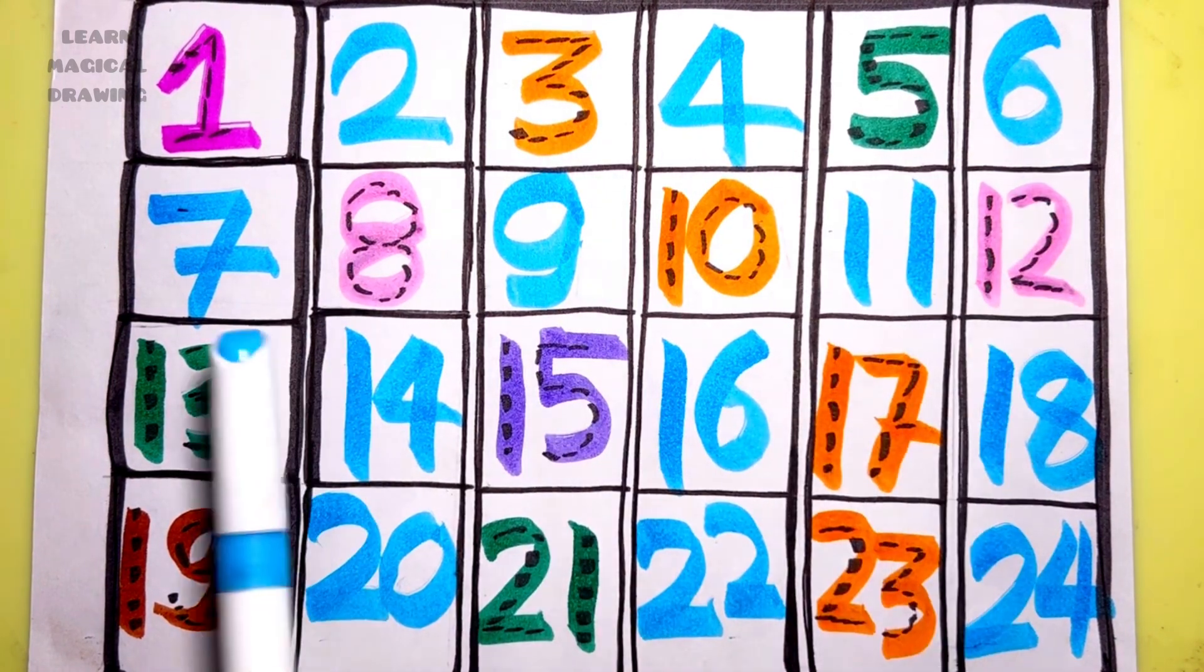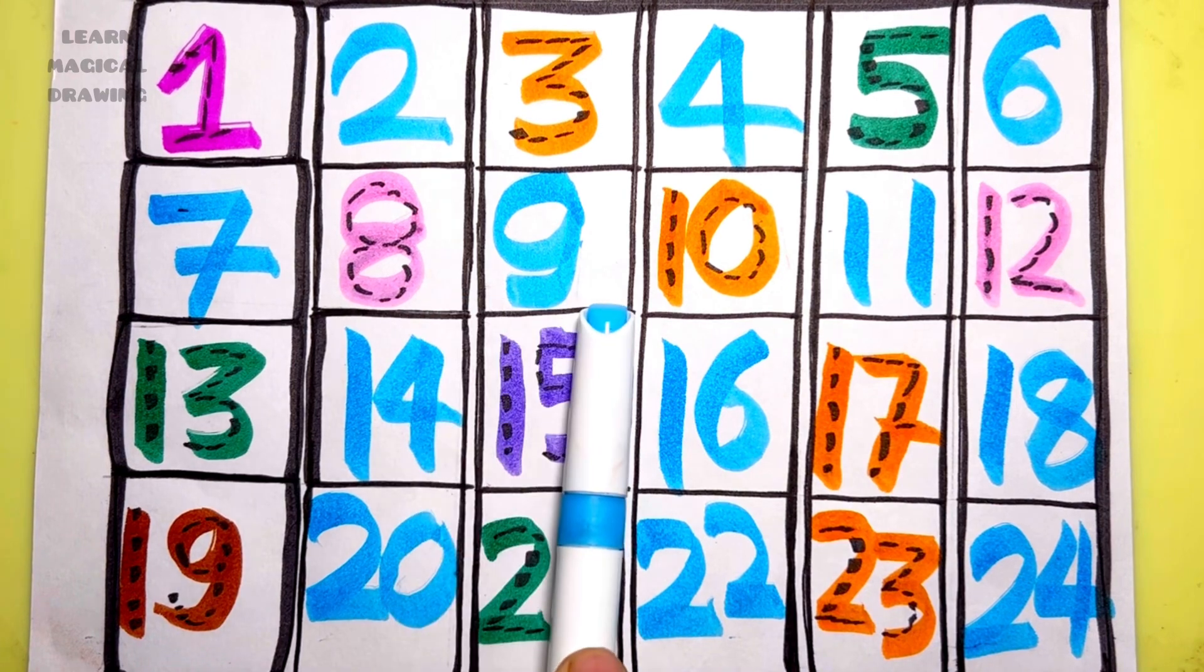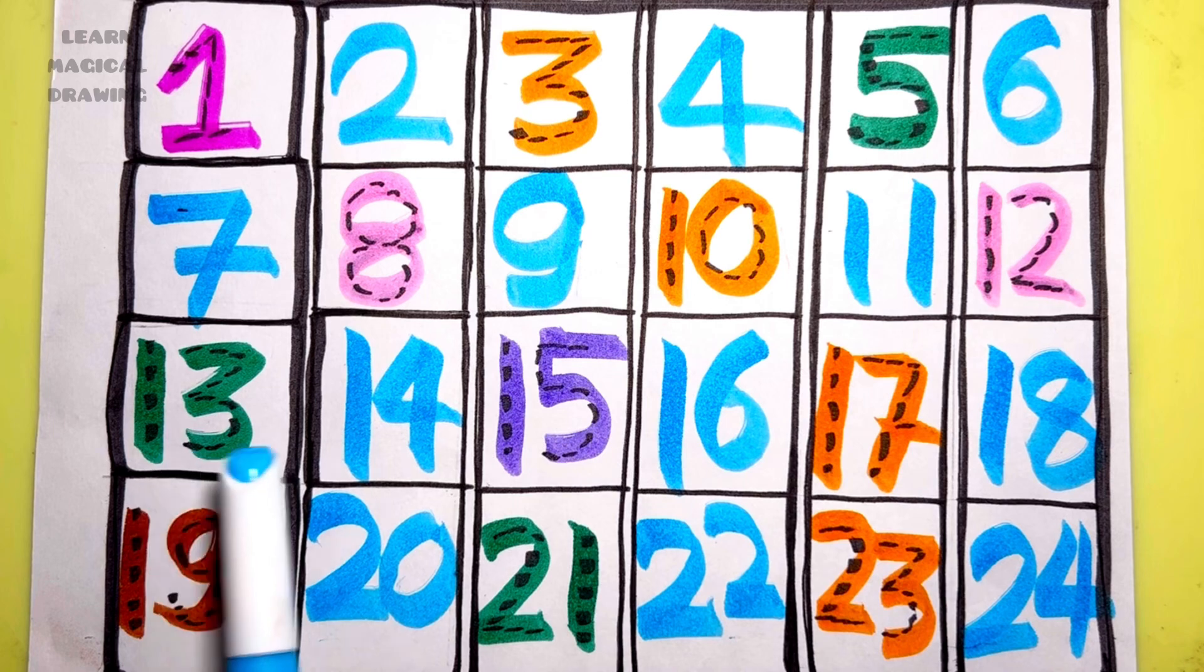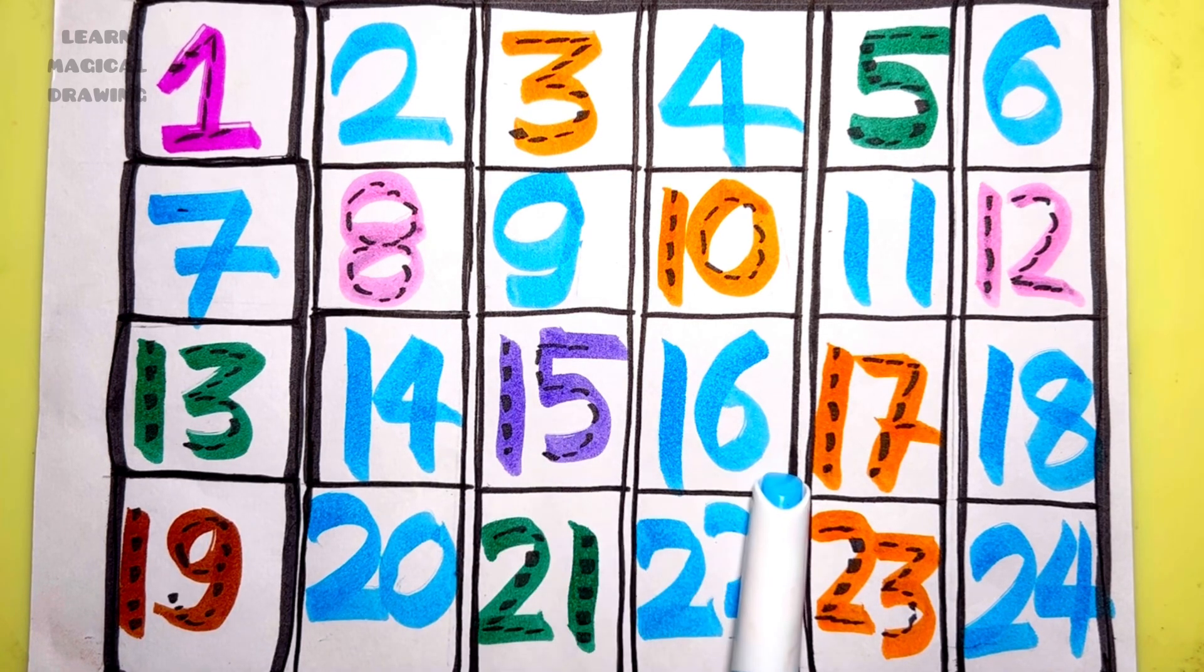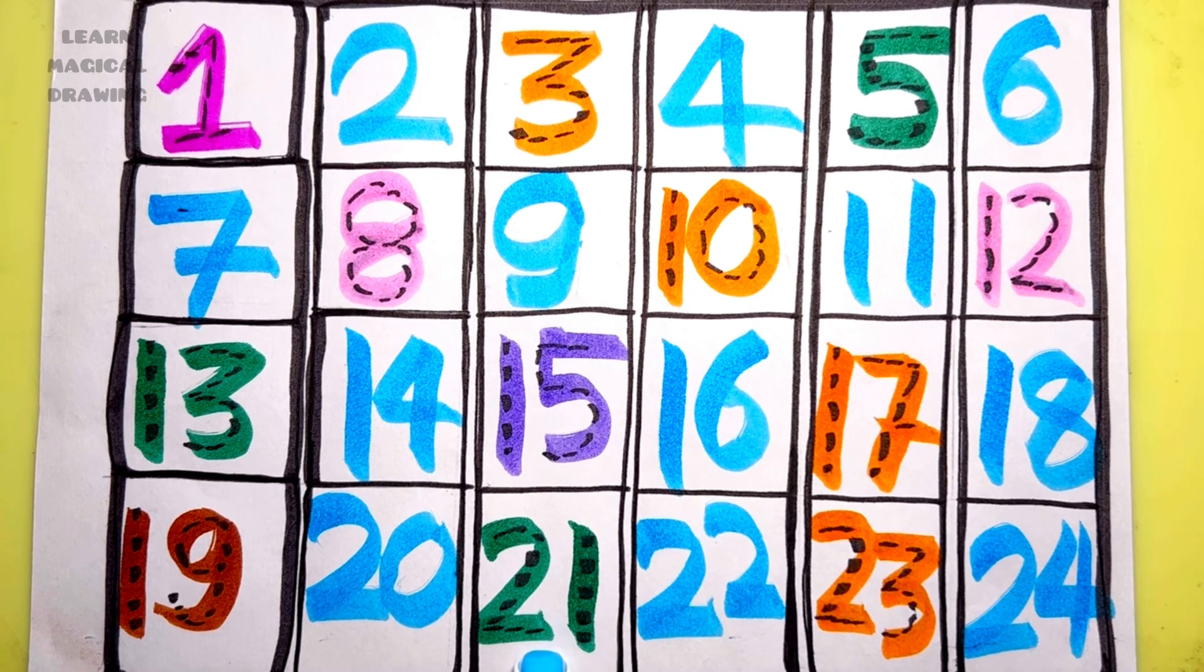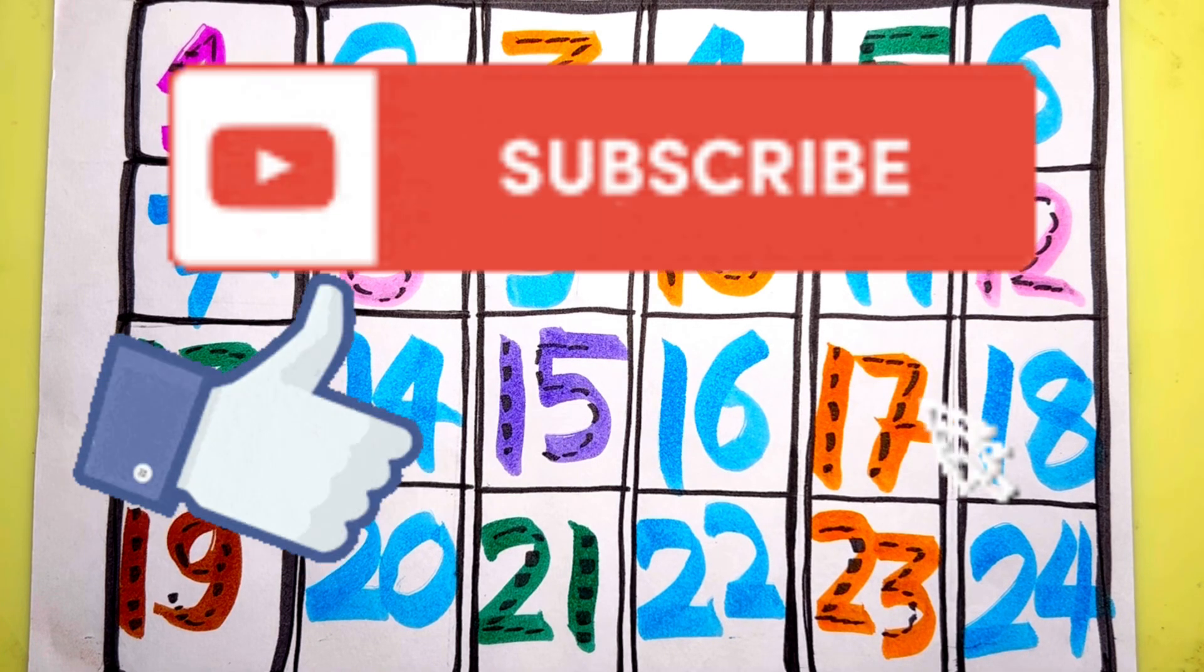Eleven, twelve, thirteen, fourteen, fifteen, sixteen, seventeen, eighteen, nineteen, twenty, twenty-one, twenty-two, twenty-three, twenty-four. Like and subscribe for more videos.